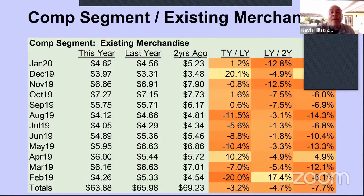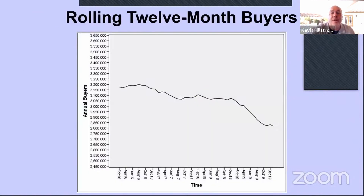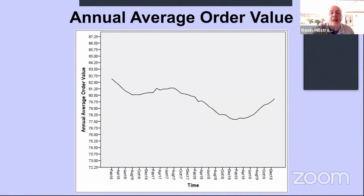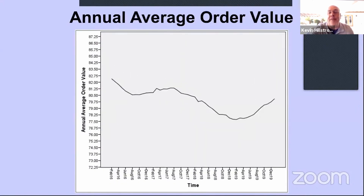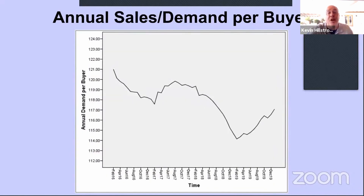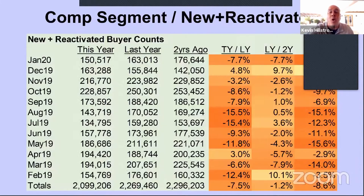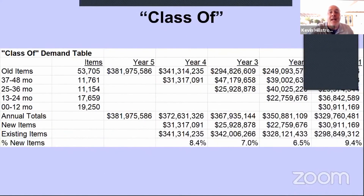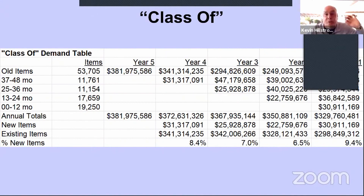Going back to the earlier slides: sales and number of buyers still don't look good. But average order value in the past year is looking good, and the annual amount a customer spends is starting to look better. All these changes this brand is making are starting to pay off, and the new merchandise they put in over the past year is starting to fix the problem. The issues they created two and three years ago were so severe that it's still hurting what's happening today — but they are actually on a path to fix this business, and that's a big positive.